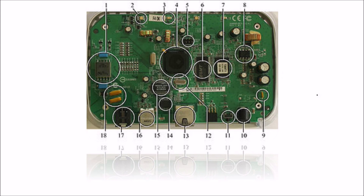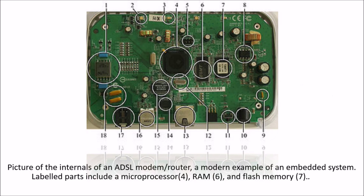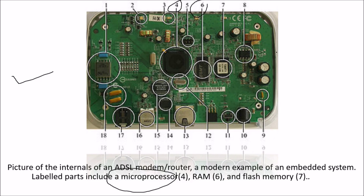This is an example picture taken from Wikipedia showing the internals of a modern ADSL router — a modern example of an embedded system. The labeled parts include the microprocessor, the RAM, and a flash memory.